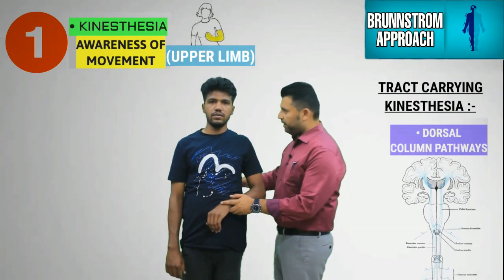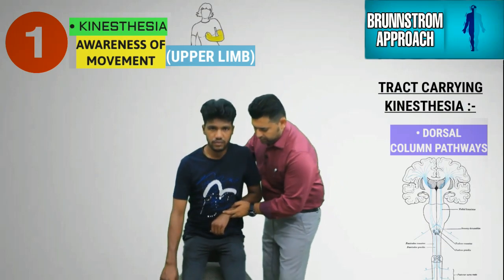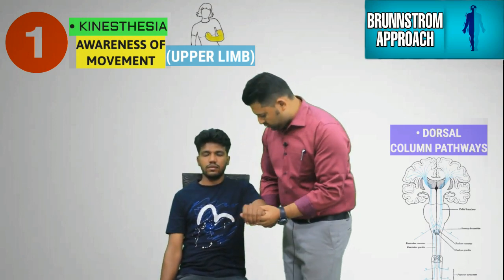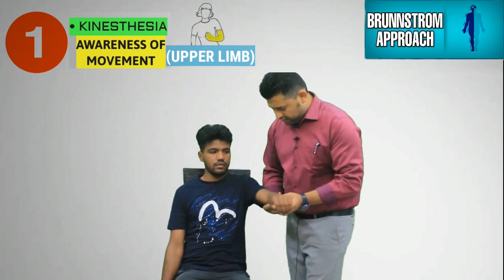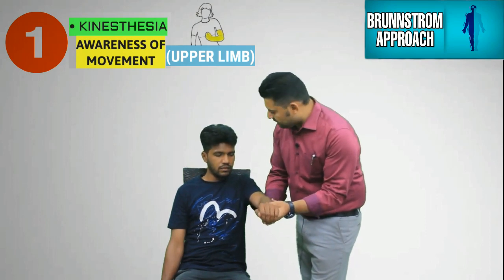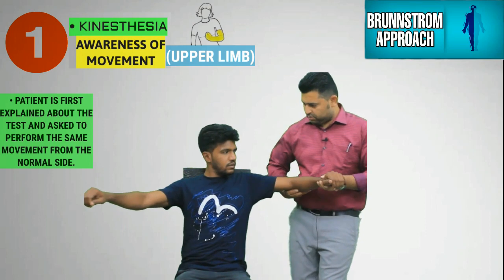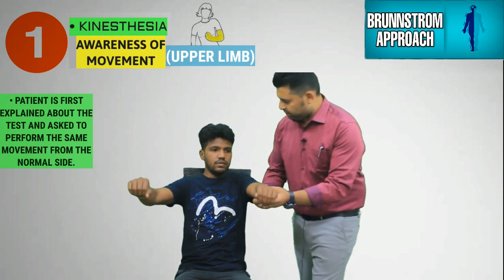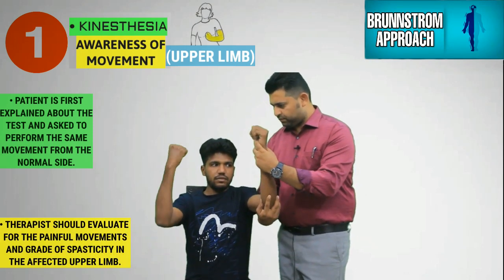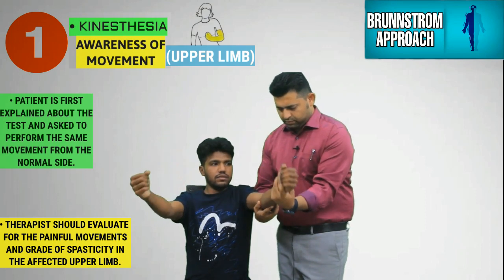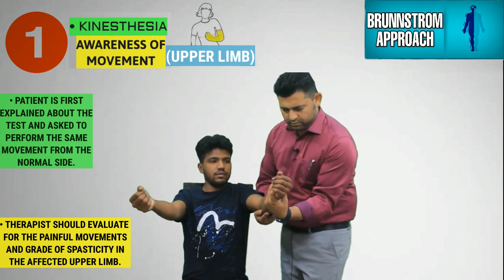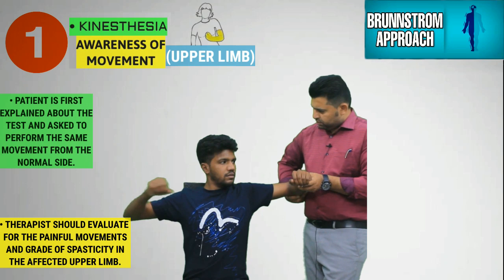For kinesthesia testing in the upper limb, the patient is made to sit on a chair and the physiotherapist supports the affected upper limb of the patient, moving it into different positions while the patient is asked to observe the movement and perform it identically with the unaffected upper limb. While moving the affected upper limb passively in different directions, the physiotherapist makes a quick assessment to determine whether any painful movements are present.